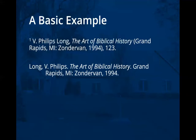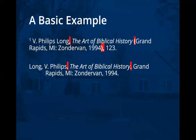When we get to the bibliography, it looks a little different. Same information, just formatted differently. The author's name is inverted — so instead of first name, middle name, last name, it goes last name, first name, middle name. Also, whereas the footnote uses commas and parentheses to separate pieces of information, the bibliography uses periods. You always end with a period.